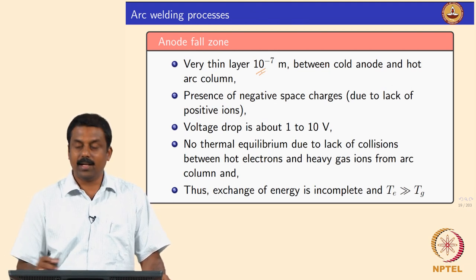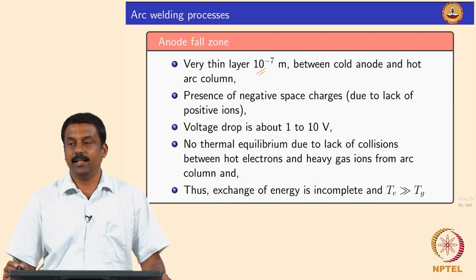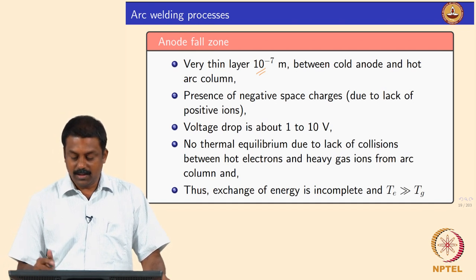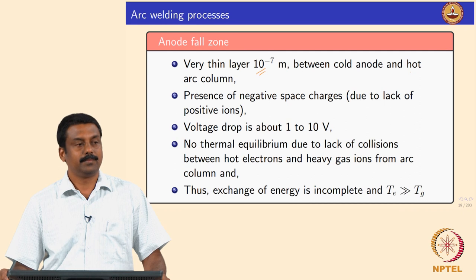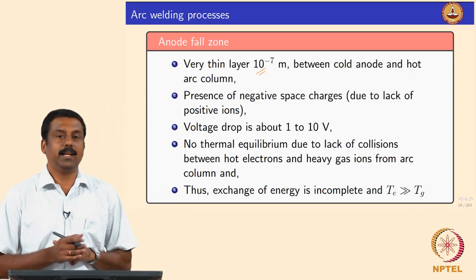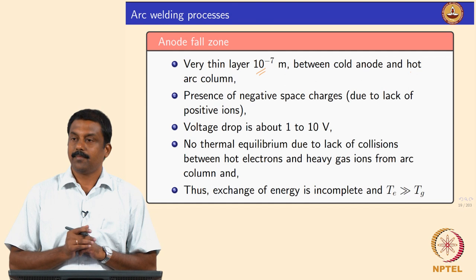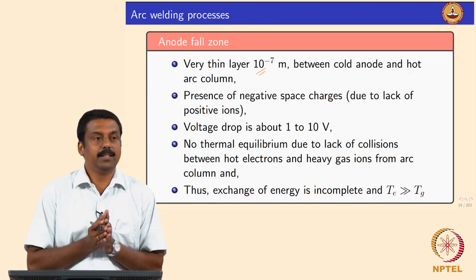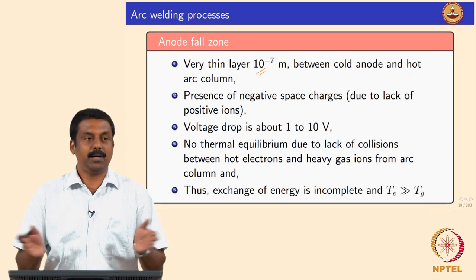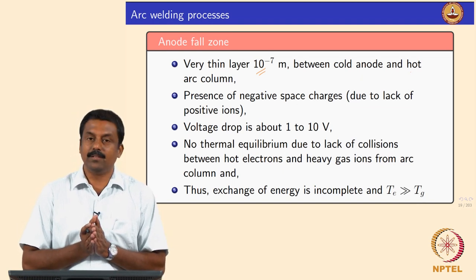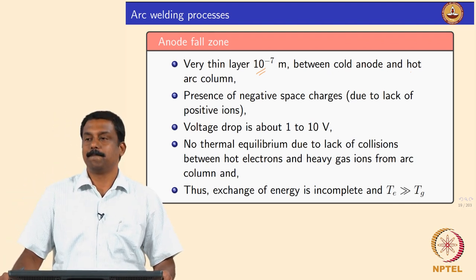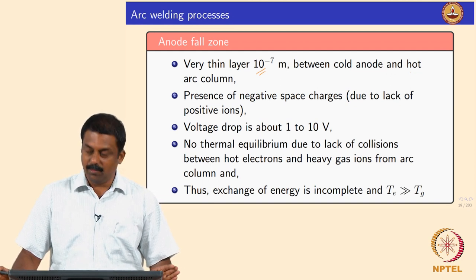In a stable arc condition, the anode fall zone is very thin — on the order of 10⁻⁷ meters, extremely few microns. This region between the cold anode and the hot arc column is characterized by the presence of electrons — the negative space carriers and energy carriers. Since the anode is positive, you would not expect a positive ion there due to repulsion. The anode fall zone is characterized by accumulation of negative space charges and lack of positive ions. The voltage drop is somewhere between 1 to 10 volts.